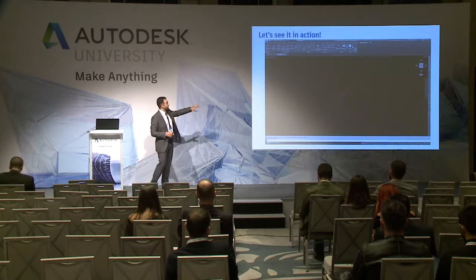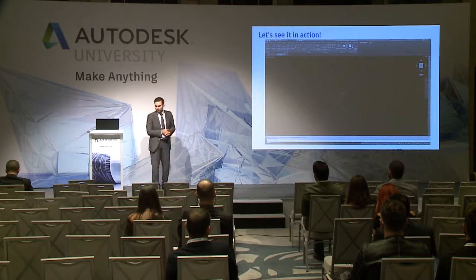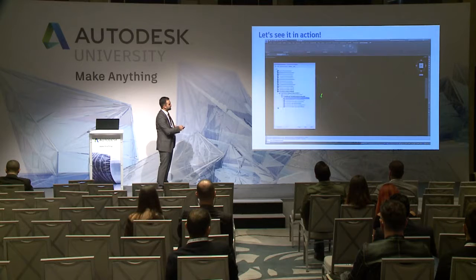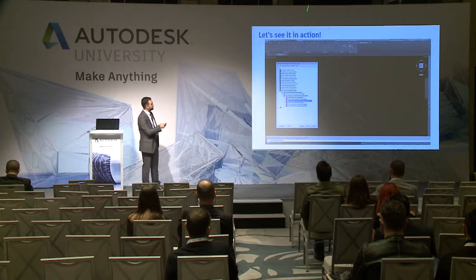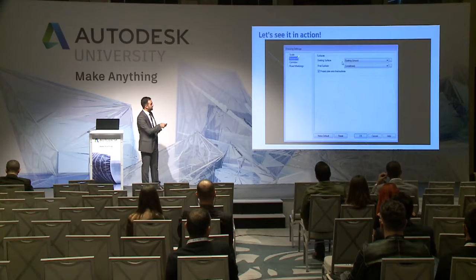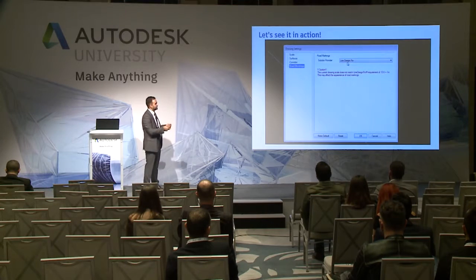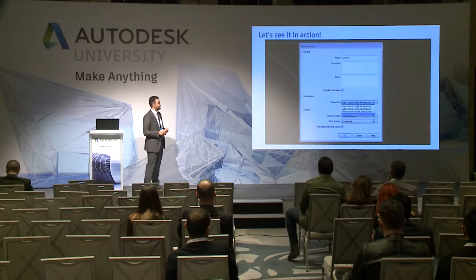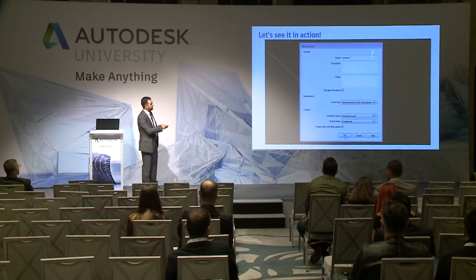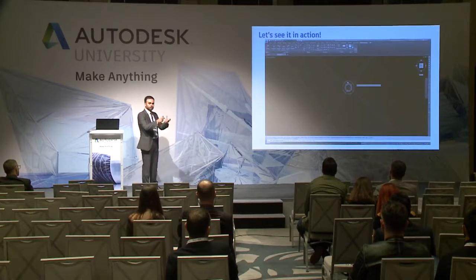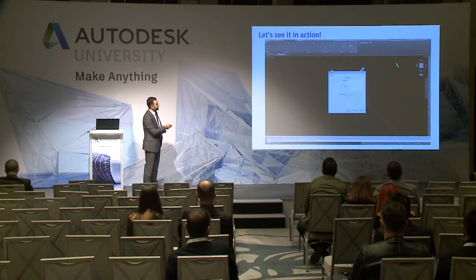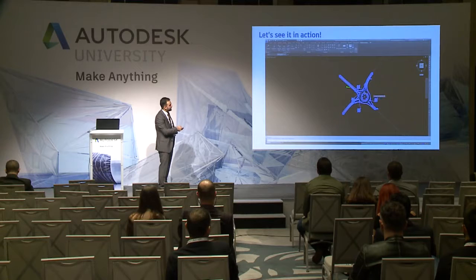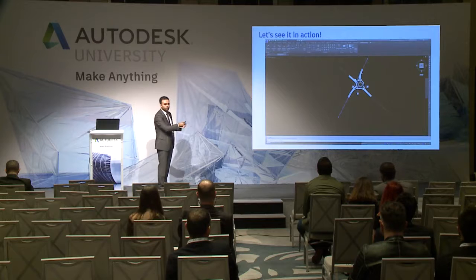Here we're working in AutoCAD — we don't have a terrain model, just proposed alignments — and we want to design a roundabout at the intersection of these two roads. We activate Vehicle Tracking, go to the roundabout tool, pick the roundabout standard, pick the surfaces if we have any, set parameters, name the junction, and hit OK. It prompts me to locate the roundabout, creates it, and identifies the legs. With just two clicks, I'm creating a full roundabout complete with the apron and entering and exiting curves.